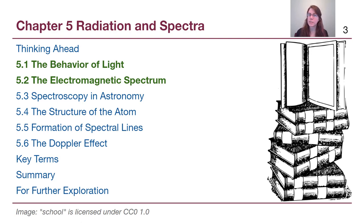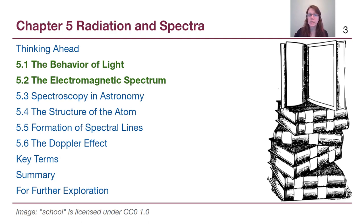Welcome to chapter 5 in OpenStax Astronomy. This is the first video of several that cover the chapter on radiation and spectra. In this chapter we're going to talk about light, all the different types of light that exist, and how astronomers use it to gather information about distant objects. This first video is going to cover the introduction to light itself, as well as the different types of light that exist.